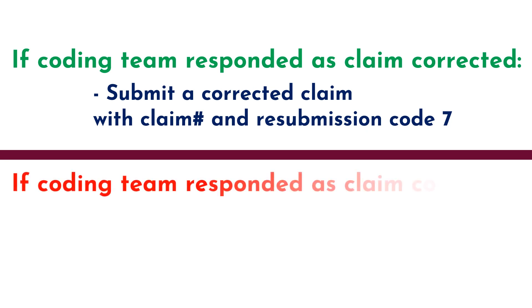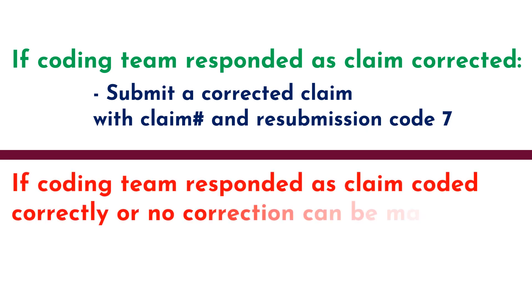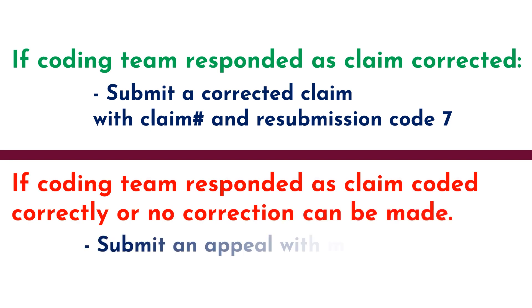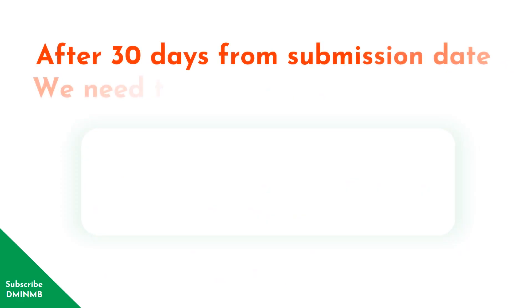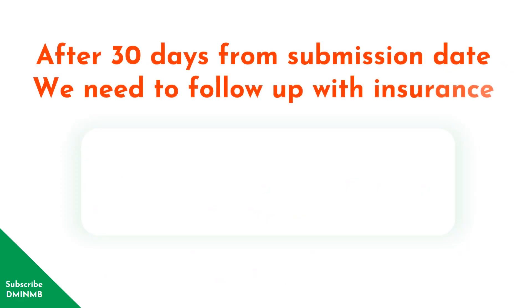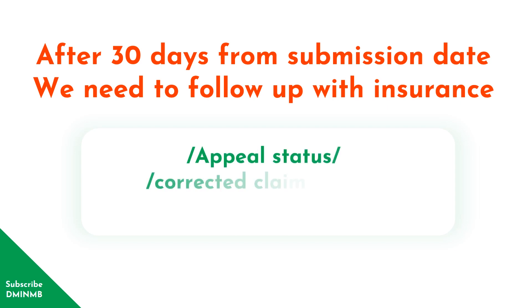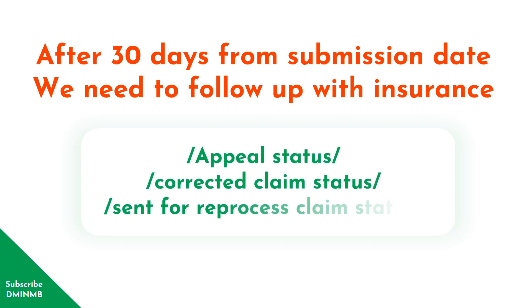If the coding team responds that the claim was already coded correctly and no correction can be made, we need to submit an appeal to the payer along with medical records and other supporting documents. After 30 days from the submission date, follow up with the insurance to check the appeal status, corrected claim status, or reprocess claim status accordingly.